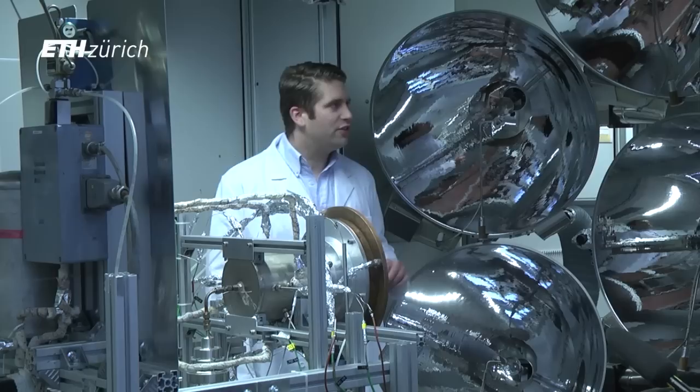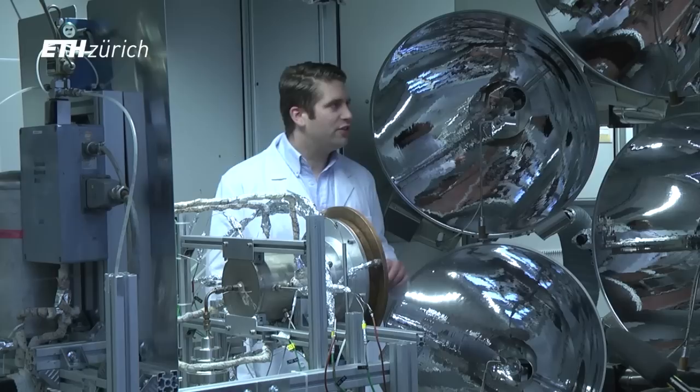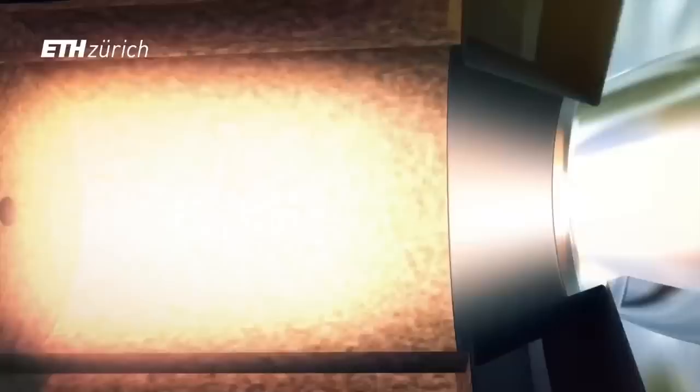Concentrated radiation simulated by our high-flux solar simulator enters the reactor through this water-cooled reactor front, heats up the cavity to around 1500 degrees Celsius. Thereby the ceria, which is placed inside the cavity, is thermally reduced.